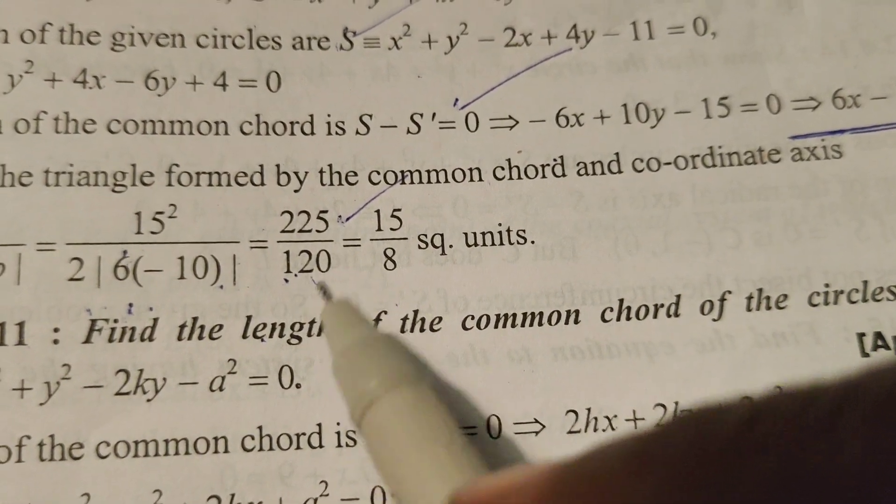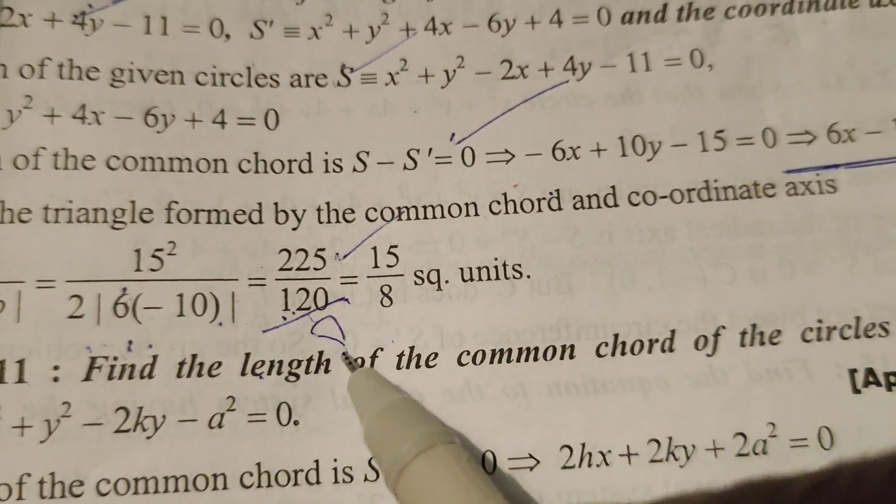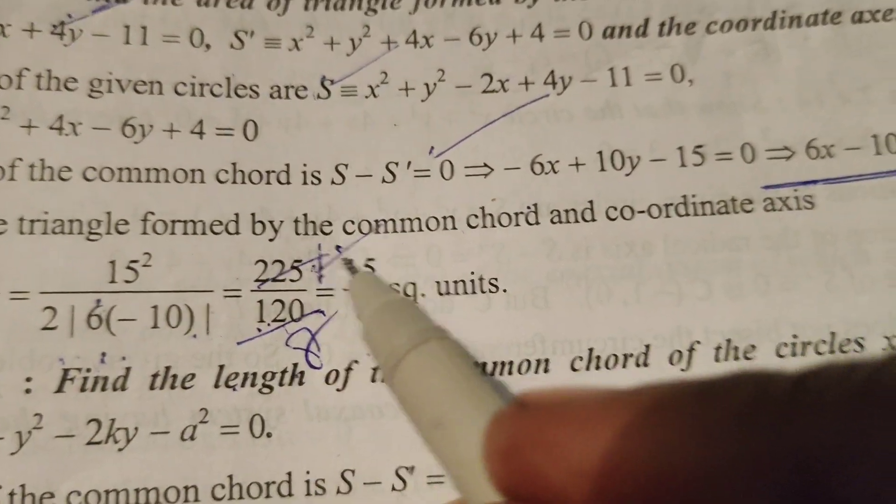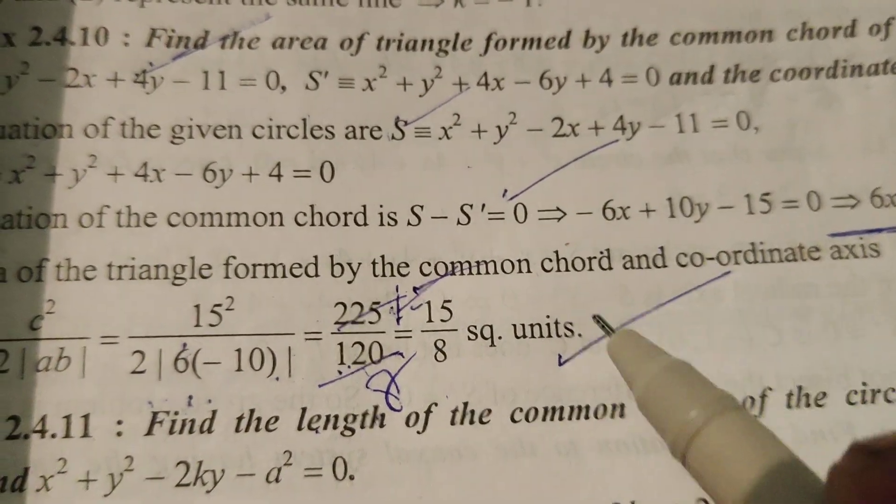After cancellation we will get: 15 times 8 is 120, 15 times 15 is 225. Therefore 15 by 8 square units.